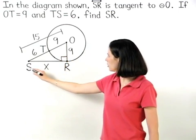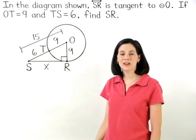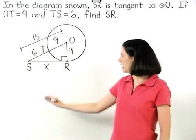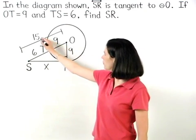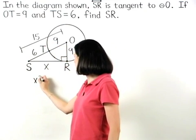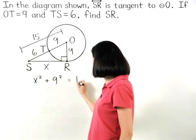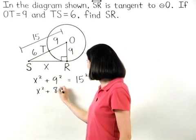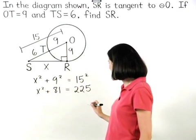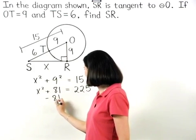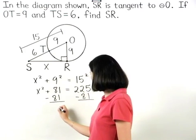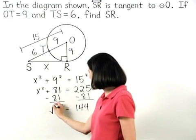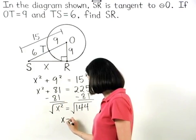This means that triangle SRO is a right triangle. So to find the value of X, we can use the Pythagorean theorem to set up the equation X squared plus 9 squared equals 15 squared, which simplifies to X squared plus 81 equals 225. And subtracting 81 from both sides gives us X squared equals 144. And square rooting both sides, we find that X equals 12.